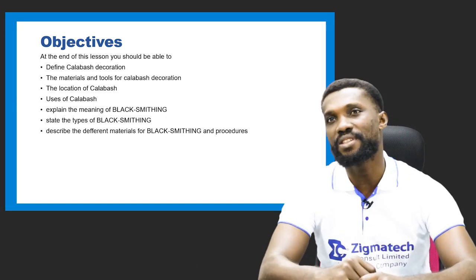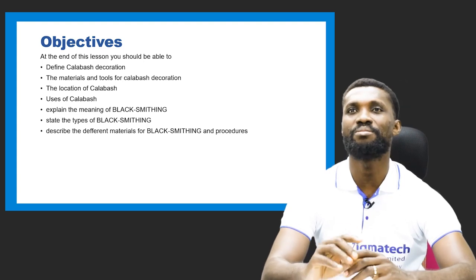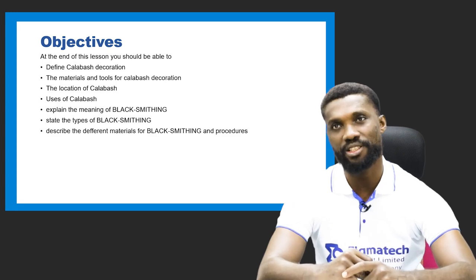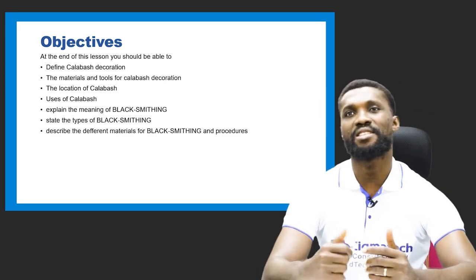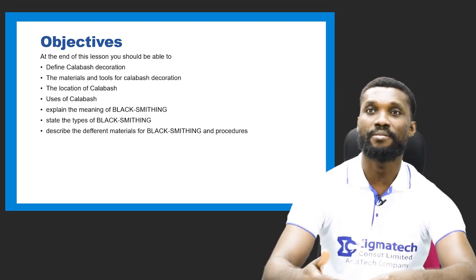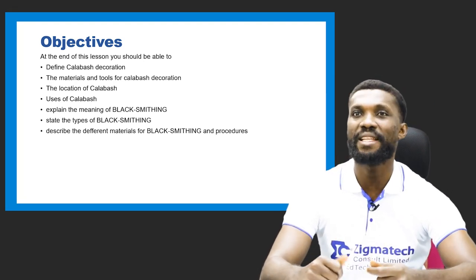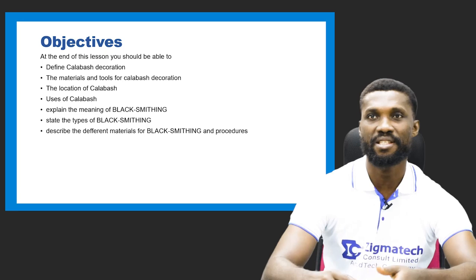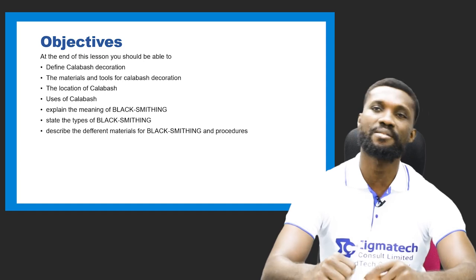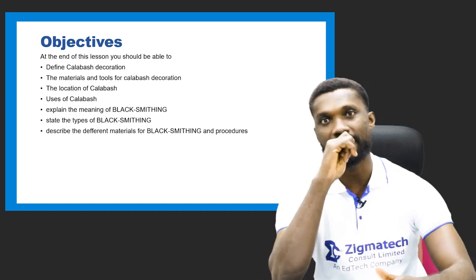The objectives: at the end of this lesson, you should be able to define calabash and calabash decoration, know the materials and tools for calabash decoration, the location of calabash, and the uses of calabash. Additionally, we are going to look at another skill known as blacksmithing. You'll be able to explain the meaning of blacksmithing, state the types, describe the different materials, and the procedures involved.